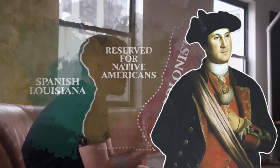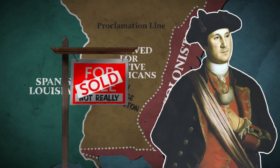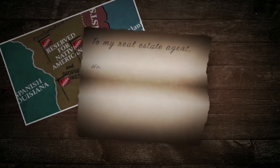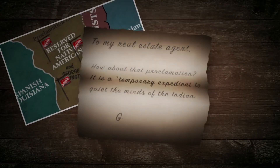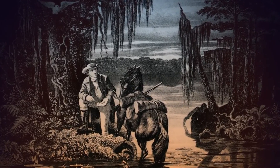French and Indian War hero George Washington was one of the many colonists who flouted the law and sought to purchase as much forbidden territory as possible. In a letter to his real estate agent, he dismissed the Proclamation of 1763 as a temporary expedient to quiet the minds of the Indians. Washington believed the Proclamation would be repealed someday, and when it was, he wanted to already have a claim to this land.